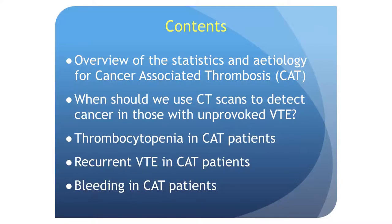I'm going to give a quick overview of the statistics and etiology, and then we're going to move into exactly what we should be investigating to detect cancer when there's an unprovoked VTE event. We're going to look at thrombocytopenia in cancer patients, recurrent VTE in cancer patients, and bleeding in cancer patients, all of whom have had thrombotic events.